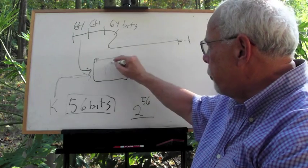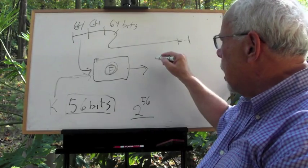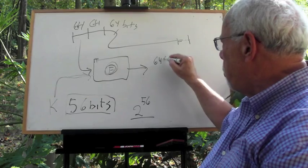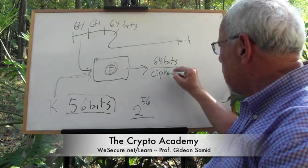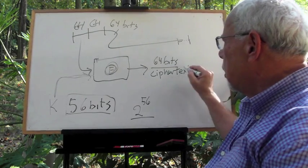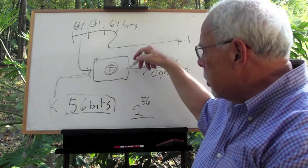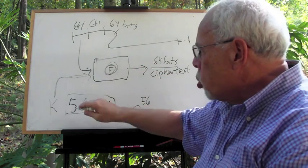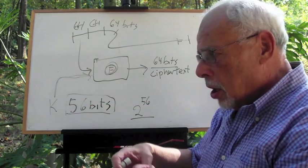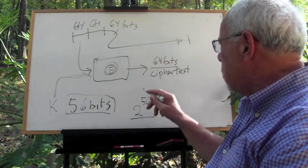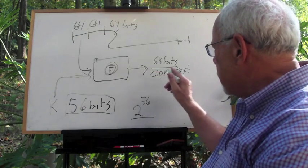When we finish the manipulation of the encryption, what we get out is 64 bits of ciphertext. So 64 bits of plaintext fed into the encryption box of DES together with 56 bits of key—they are churned and churned, and what comes out is a block of the same size, 64 bits of ciphertext.